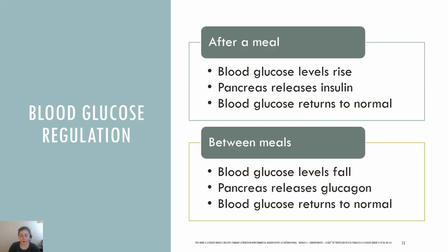Let's talk about glucose regulation in the body. After a meal with carbohydrates, blood glucose levels will rise. Your pancreas will release insulin, which helps to transport glucose into the cells to use for energy and also store glucose as glycogen. Insulin is a hormone made by the beta cells of the pancreas. As a result, blood glucose levels return to normal, which is typically between 70 and 100 mg per deciliter. If we need glucose right away for energy, we can metabolize it through cellular respiration. If we don't need the energy right away, it is stored as glycogen or converted to fat.